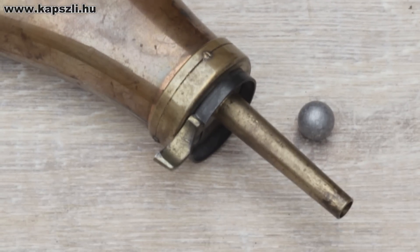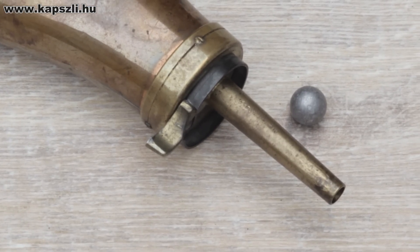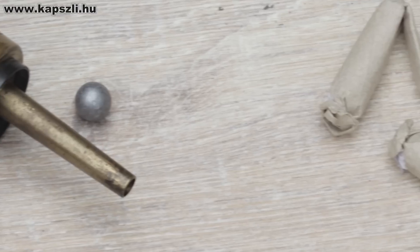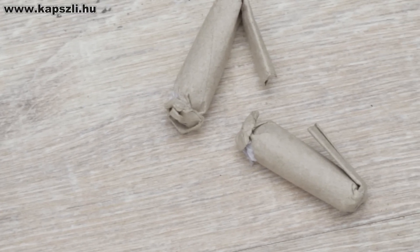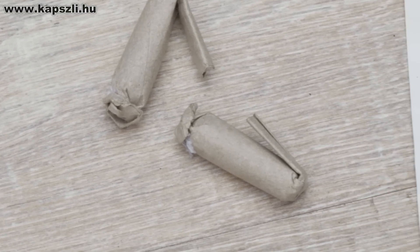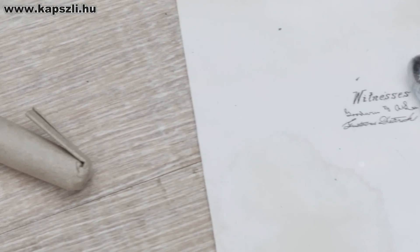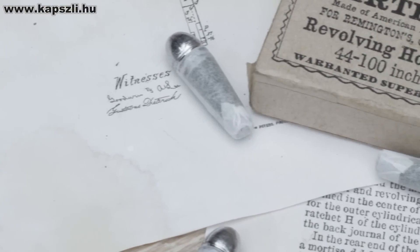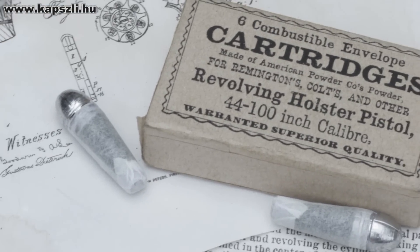There were various ways to load a percussion revolver back in the days of the Civil War. The soldier could load the six-shooter with loose powder and ball, or pre-rolled paper cartridges the soldier had to open before use. And there were cartridges that were ready to fire without opening, like the combustible envelope cartridges.